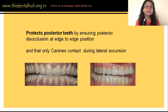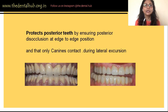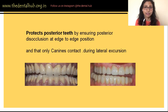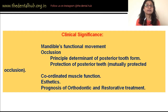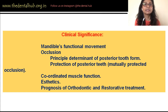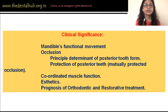Posterior disocclusion protects the posterior teeth, ensuring there is no undue load on them even when activity is taking place in the anterior segment of the arch. This results in decreased load on the posterior teeth, the muscles, and the temporomandibular joint — protecting the teeth, the muscles, and the joint. Anterior guidance is also a determinant of the height and contour of the posterior teeth.